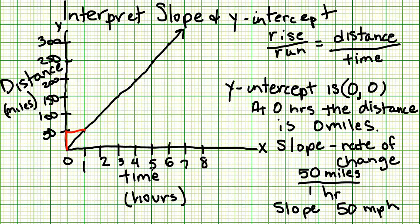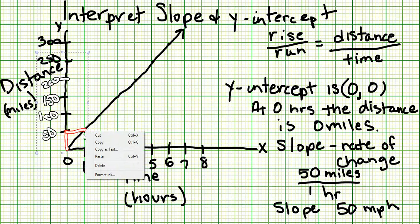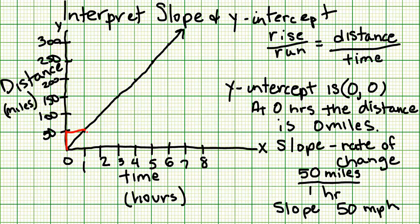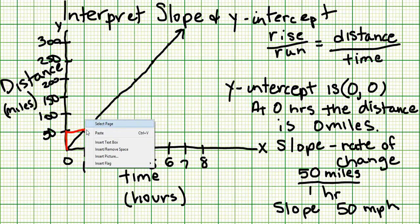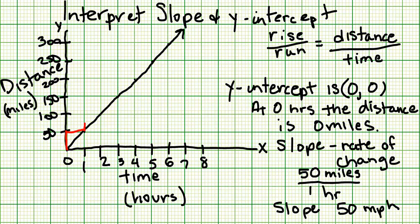No matter which two points we choose, the rate should be the same. Let's say we start here and see what it takes to get to the next point. We rise 50, we run 1, so the rate of change is still 50 over 1. Or let's start from here and go to this point up here.